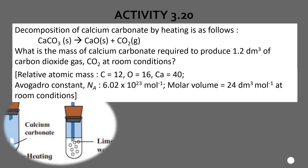Here we have one example in activity 3.20. Decomposition of calcium carbonate by heating: calcium carbonate heated produces calcium oxide and carbon dioxide. The question asks: what is the mass of calcium carbonate required to produce 1.2 dm³ of carbon dioxide gas at room condition?